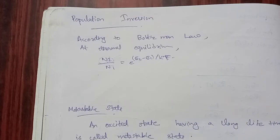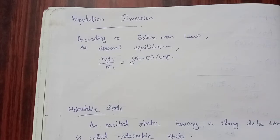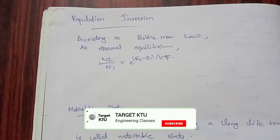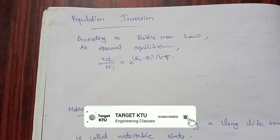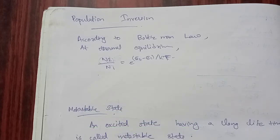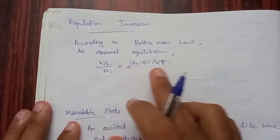Hi friends, welcome back. Today we cover Population Inversion, Metastable State, and Optical Resonance Cavity — some important topics of laser and fiber optics. This video is already uploaded in this channel. Subscribe to this channel. The laser types we will discuss include Ruby Laser, Semiconductor Laser, and Helium-Neon Laser. The first topic is Population Inversion.